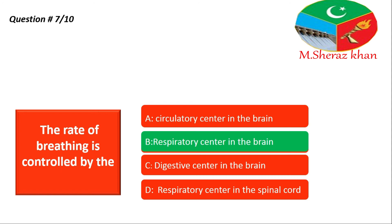So the right answer is respiratory center in the brain. Breathing rate ko jo control karta hai wo hamara brain hai. Brain ko hum teen main parts mein divide karte hain: forebrain, midbrain, aur hindbrain. Hindbrain mein ek part hai jisko hum medulla oblongata kehte hain, aur isi medulla oblongata mein respiratory center hota hai. That's why jo respiratory center hai wo basically brain ke andar maujood hoti hai, aur wahi control karti hai hamari breathing rate.